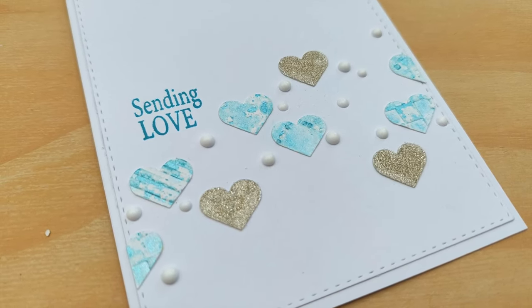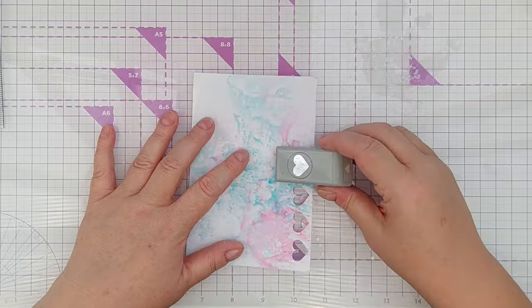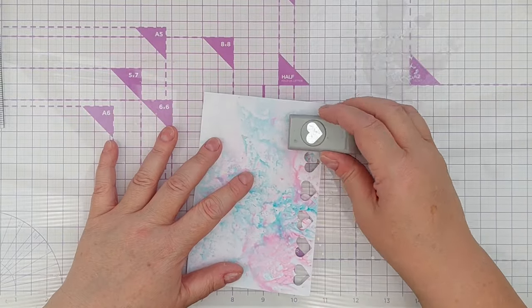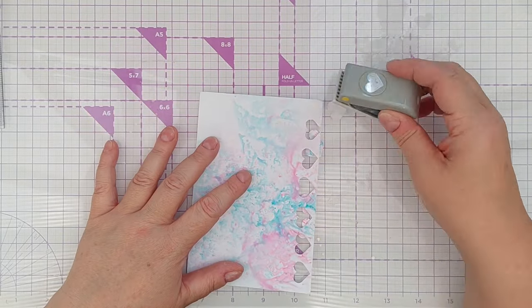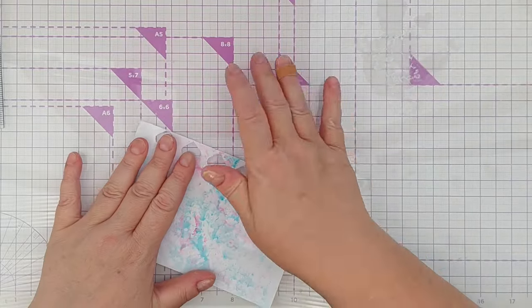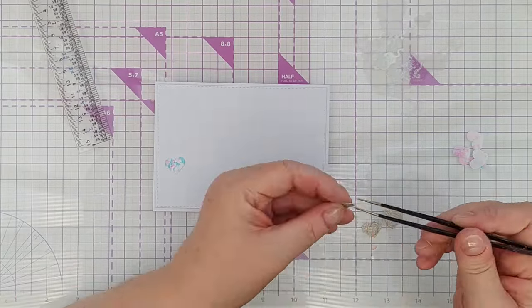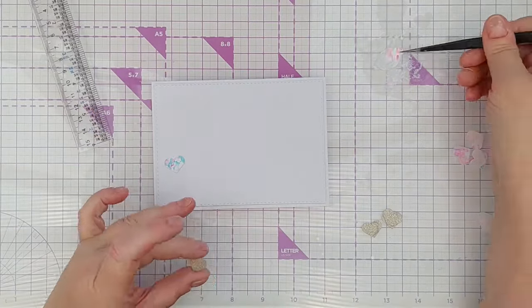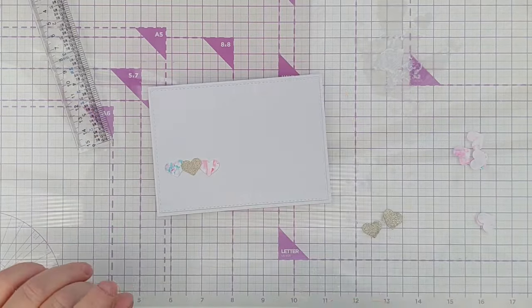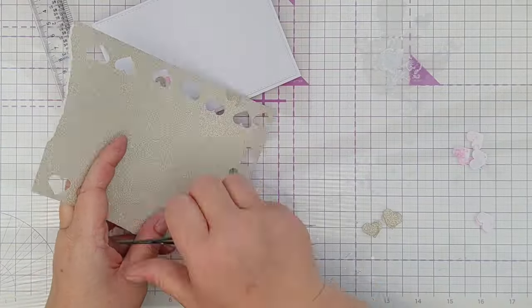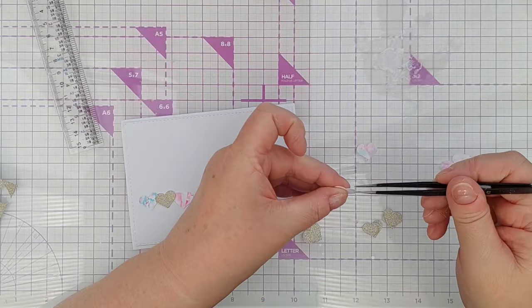And now on to our last card for today, card number four. The background I chose to use this time was made by smushing Catherine Pooler inks onto glossy photo paper so the little hearts I punched out are colourful and glossy. If you want to see how I made this I have a video in which I made a very similar one. I'll leave a link to that below. It's part of my Ink Pads 101 series.